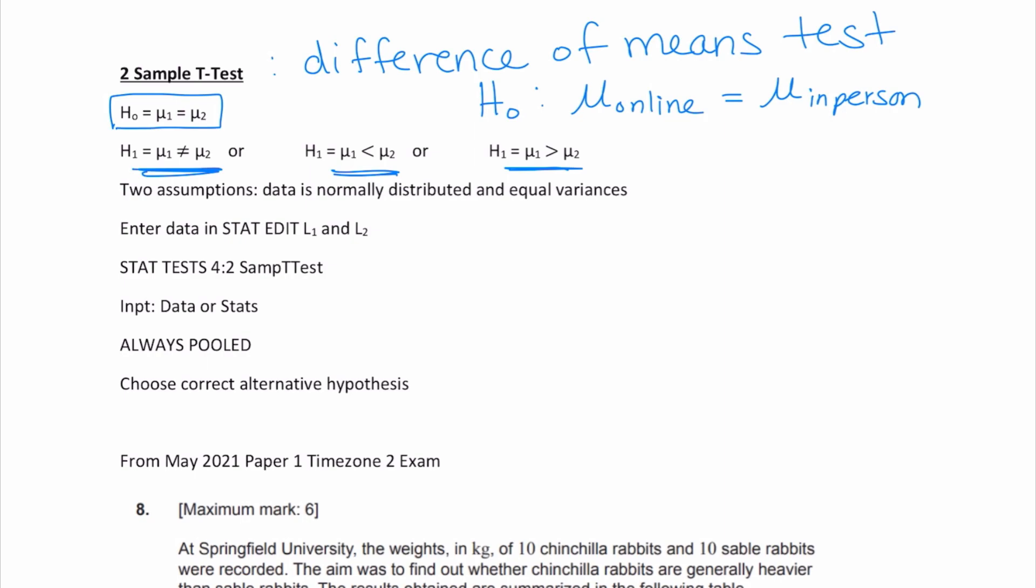They could give you the mean and standard deviation of each group, or they could give you actual data. In the cases that they give you actual data, once you go to the test, you're going to have to have entered your data under stat edit, list one, list two. Make sure you keep track of which one is group one, which one is group two. It depends on the problem and how you are writing it. Then you're going to go to stat test, option four, two-sample t-test.